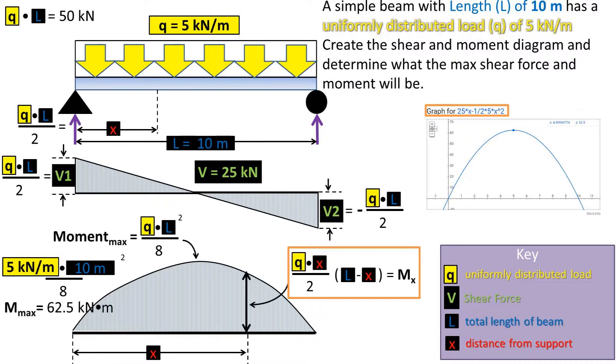In case for some reason you need to find the moment at any other point, you can use the equation q times x over 2 times l minus x to get the moment at the designated x position. This can be found by taking the equation for the shear force and applying the power rule in calculus.